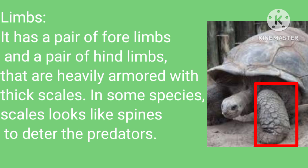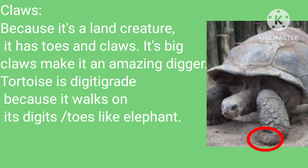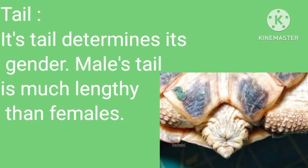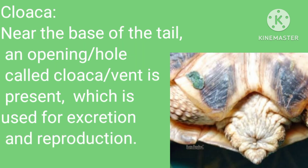In some species, scales look like spines to deter predators. Claws: because it is a land creature, it has toes and claws. Its big claws make it an amazing digger. The tortoise is digitigrade because it walks on its digits and toes, like an elephant. Tail: its tail determines its gender — the male's tail is much longer than the female's. Cloaca: near the base of the tail, an opening called the cloaca is present, which is used for excretion and reproduction.